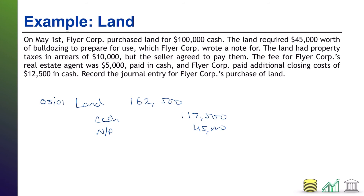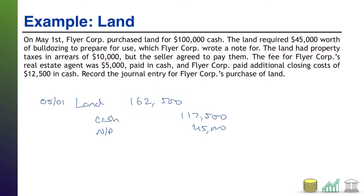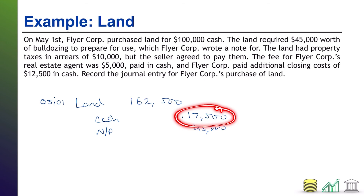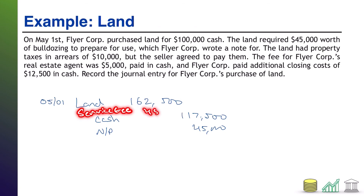Just one point to note: the back taxes of $10,000 — we didn't deal with them because the seller agreed to pay them. However, if we had assumed those back taxes and taken responsibility for them, that would have also gone into the land account. Another common question is: what if some of this stuff had not been a valid expenditure? For example, let's say the $45,000 worth of bulldozing was not required. Well, you still spent cash for that bulldozing, but instead of going into land, you would have had basically a service fee of $45,000 to cover that bulldozing rather than capitalizing it into land.